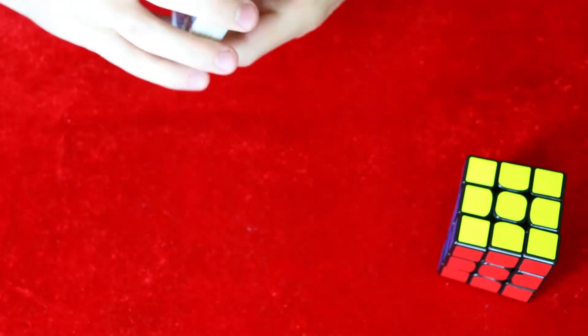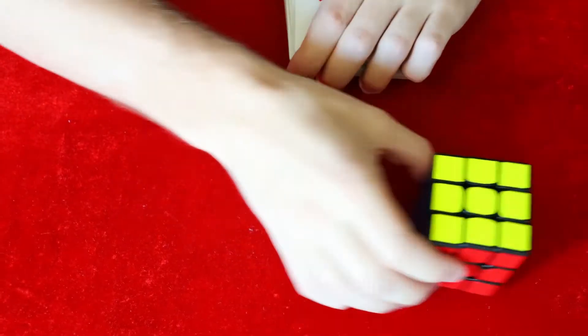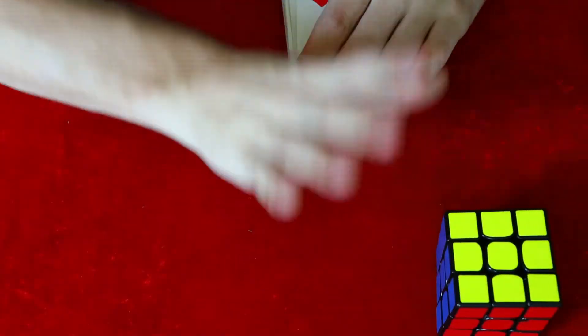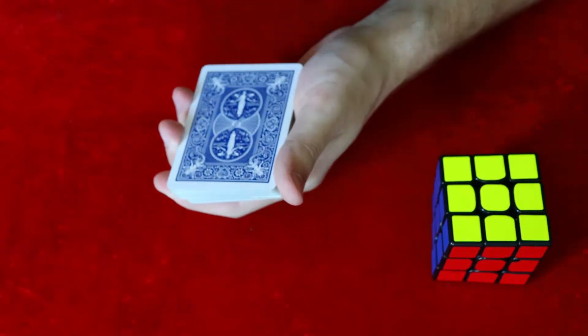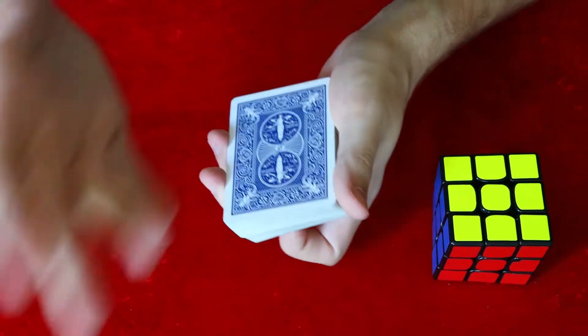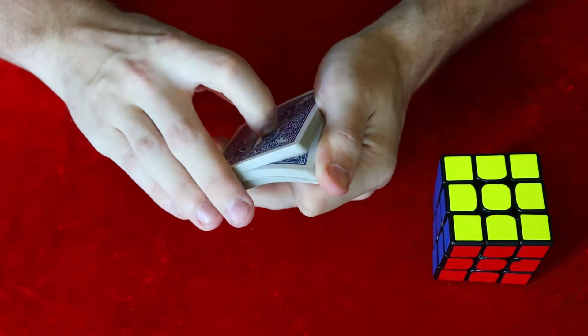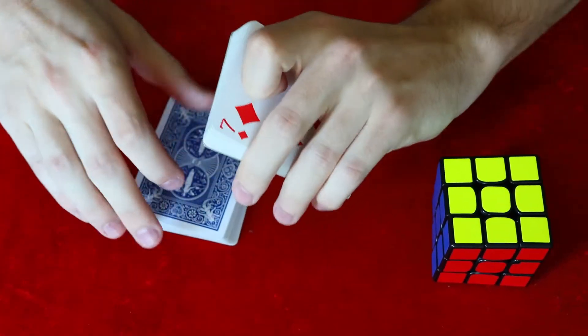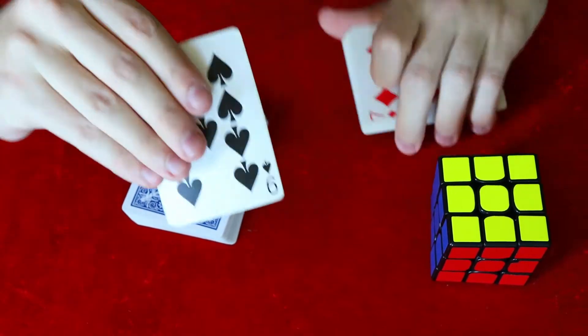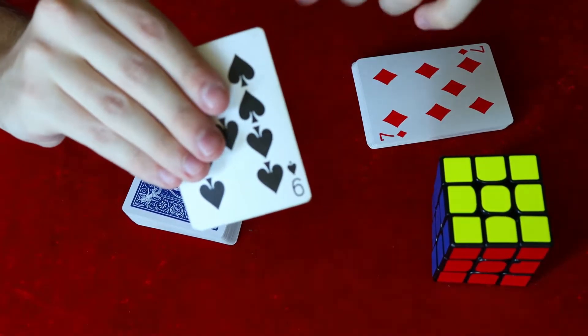So we have a deck of cards here. All the cards are different and then we have a Rubik's Cube. Now the Rubik's Cube will sit here the entire time. I will not go anywhere near it until later on in the trick. So if I had somebody here, I would go through the cards and have them say the word stop. So let's just say for instance that they stopped me right here at the nine of spades.